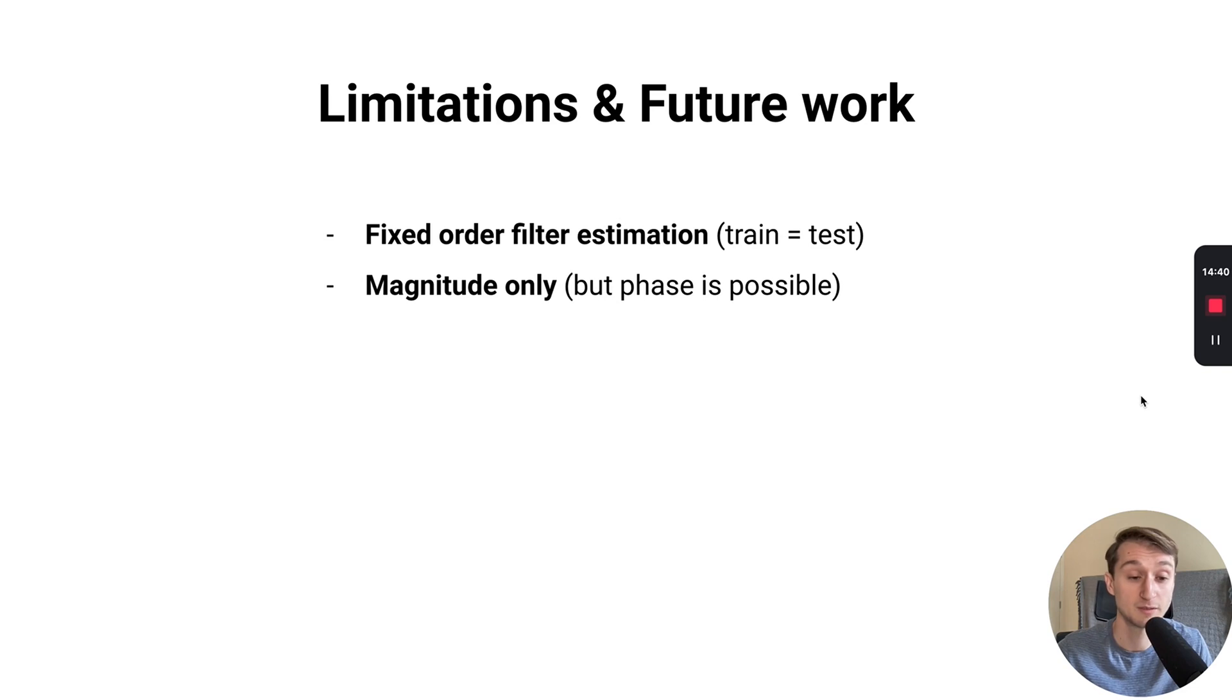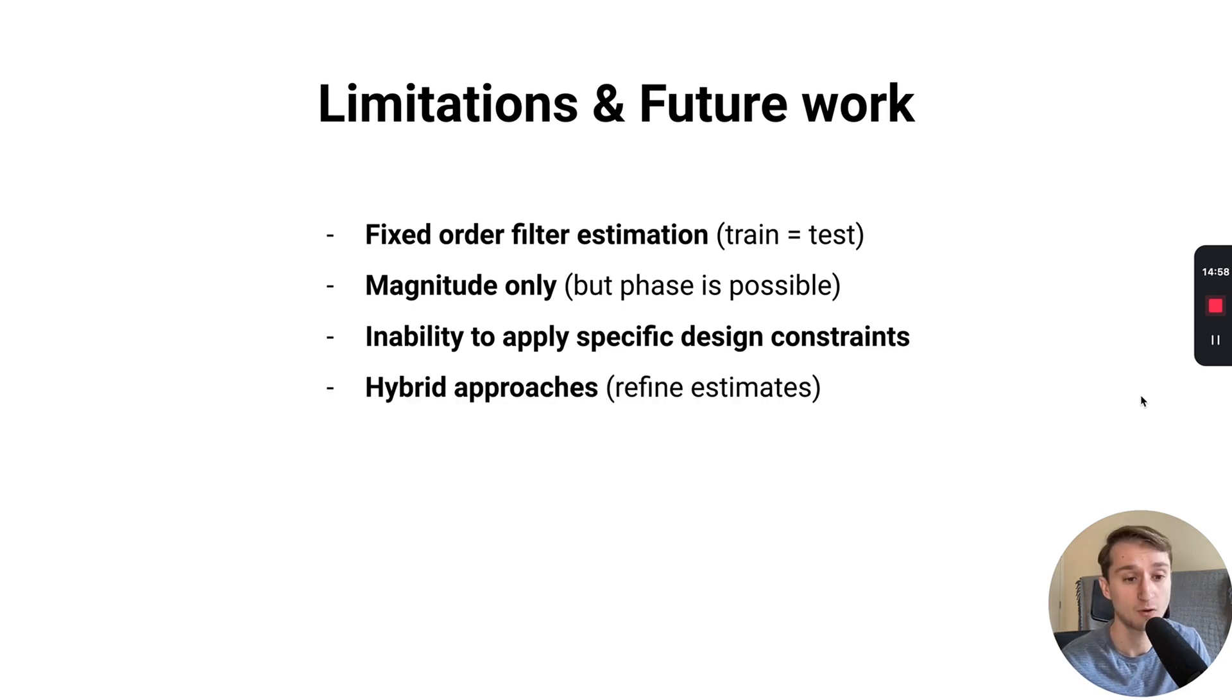The other limitation is that we only consider magnitude in the design constraints here, but phase could also be factored in relatively easily. We also have the inability to apply specific design constraints to the process, which could be another extension. Also, hybrid approaches in which we use IIRNet to first initialize some gradient-based optimization approach could also reduce the number of iterations those approaches need while retaining high accuracy in some applications. And as I mentioned, instability with filter orders greater than 32 is another thing to investigate to further extend this work.